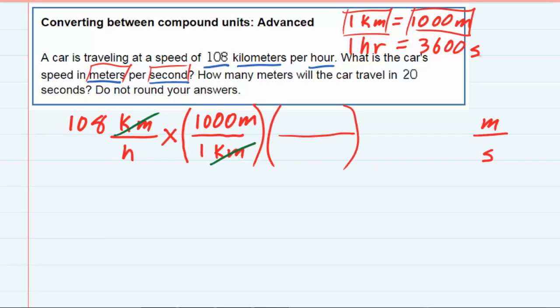So when I set up this conversion, I want the hours to cancel. So I've got hours in the bottom. I'm going to put one hour in the top, 3600 seconds in the bottom. And that way, the hours in the bottom will cancel the hours in the top. And I will be left with meters in the top, that's what I wanted, per second in the bottom. So I had to do two conversions to change both the top and then change the bottom.